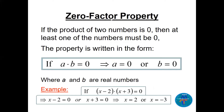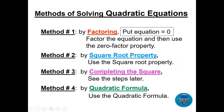One property we will use before we start is called the zero factor property. It's very simple: if the product of two numbers is equal to zero, then at least one should be zero. The rule says: if a times b equals zero, then a equals zero or b equals zero. For example, when we factor we get two brackets like x minus 2 times x plus 3, giving solutions x equals 2 or x equals minus 3.